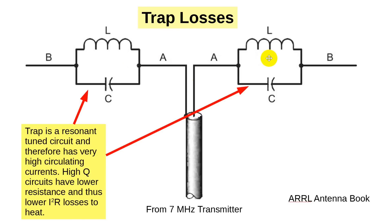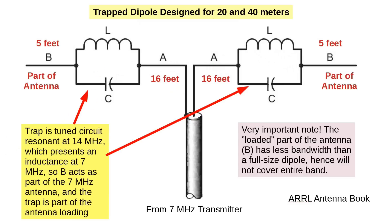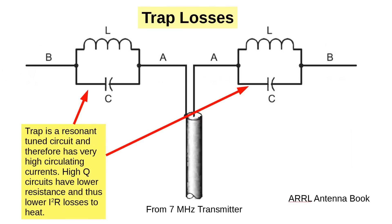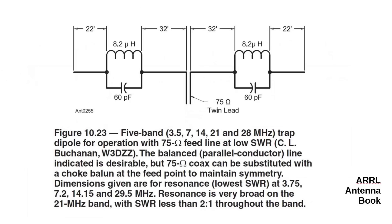So people tend to dismiss trapped antennas because of the losses — we lose some power as heat. If you can achieve a very high-Q circuit, you can minimize that heat loss quite a bit. But the higher the Q, the less the bandwidth — so it's a trade-off. Everything in antennas is a trade-off. The ARRL Antenna Book shows a real design from C.L. Buchanan, W3DZZ.